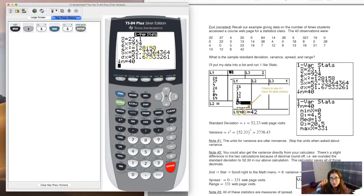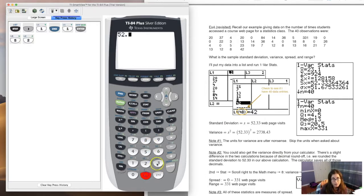It's 52.334, where I rounded here to 52.33 web page visits, or 52.33 number of class web page access times. Put something in there with context for your units. In order to find the variance, keep in mind the relationship between variance and standard deviation. Variance is the square of standard deviation, or you could say standard deviation is the square root of variance.